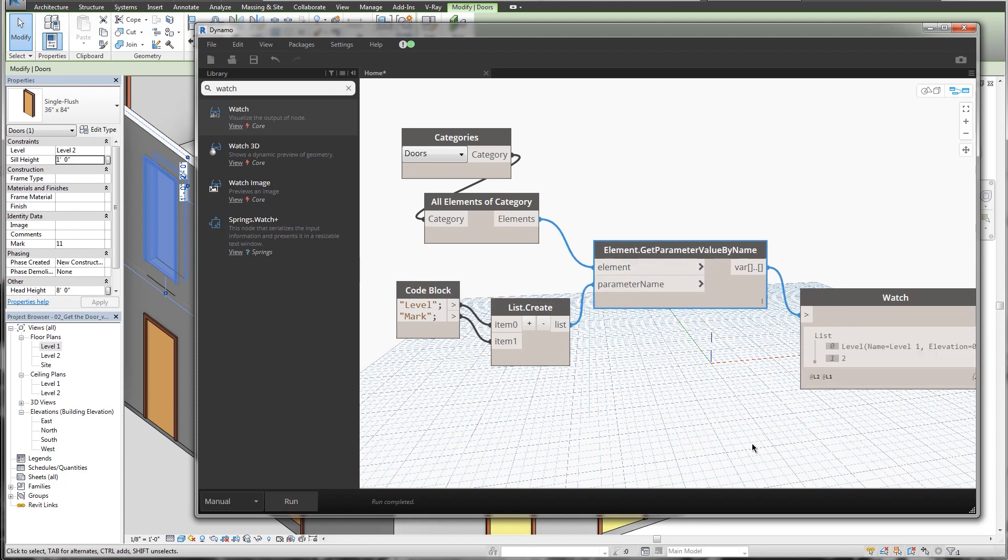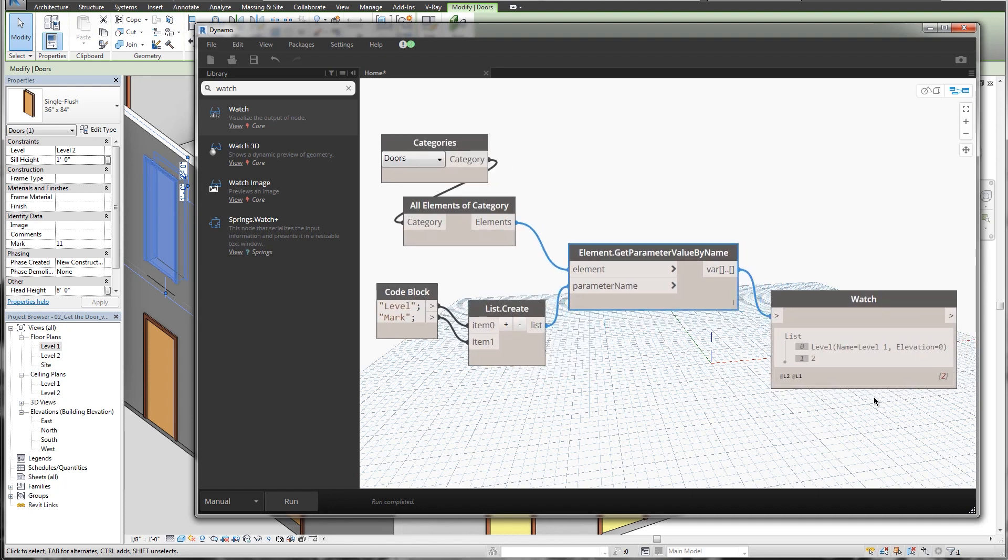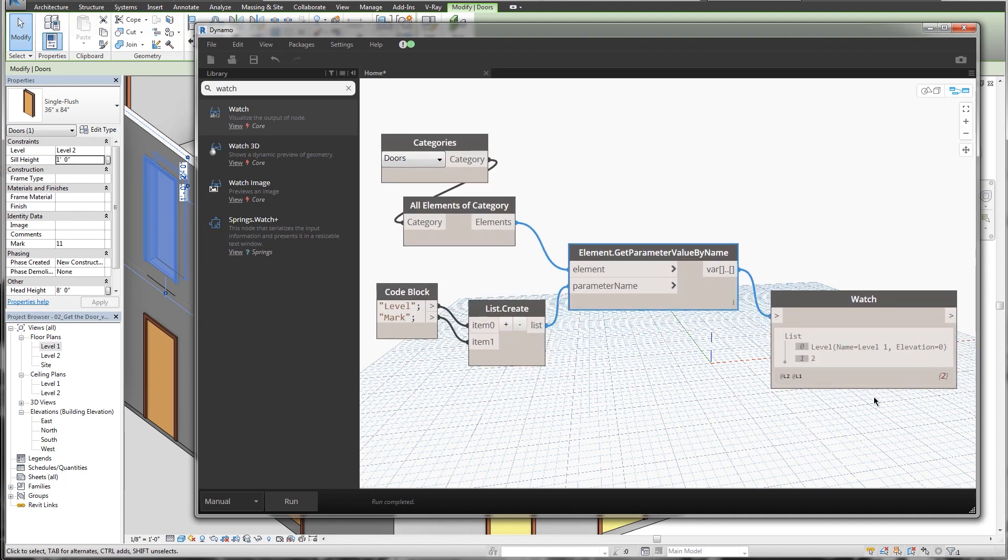So I'm going to click run and you'll see what happens is we get a list and it's given us level, level one and mark number two. So that's not right because we know that there's 18 doors in this project. So why is it not giving us 18 values for our list?